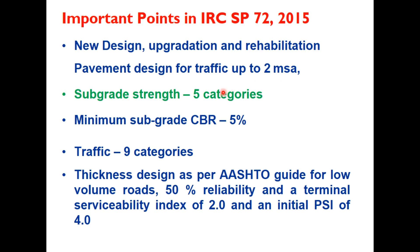Subgrade strength is measured in terms of CBR and it is divided into five categories from S1 to S5 depending upon the strength of the soil. The earlier edition of this code considered design traffic up to 1 MSA; in this revision, two more traffic categories T8 and T9 are included, so traffic is divided into nine categories. Thickness design follows the AASHTO guide for low volume roads with 50% reliability, a terminal serviceability index of 2, and initial PSI of 4.